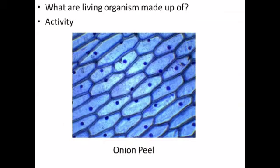The next topic is: What are living organisms made up of? To understand this concept, let us take an activity. Let us take a small piece of an onion bulb with the help of forceps available in the dissection box. Take out the skin from its epidermis part, then put a thin layer immediately in a watch glass containing water, which will prevent the peel from getting folded.